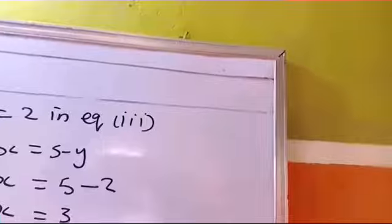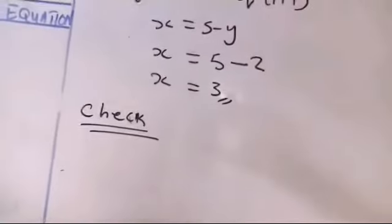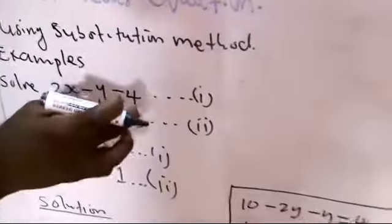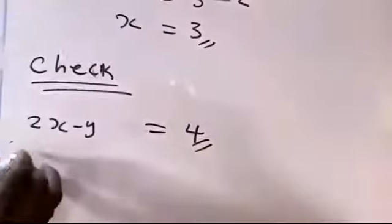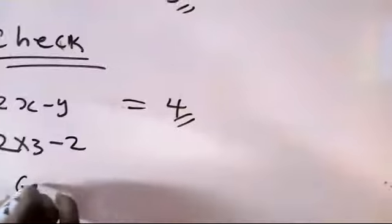Now, let's quickly check to confirm whether our answer is correct. It means, in this equation, the value of x is 3, and y is 2. If we put x and y here, if it doesn't give us 4, it means we are wrong. So, 2x - y equals 4. Let's put in the value: 2 times x is 3, minus y is 2. We have 6 - 2. You can see it's equal to 4. It means we are correct. So, this is our answer.